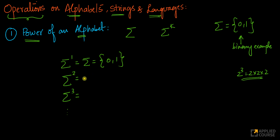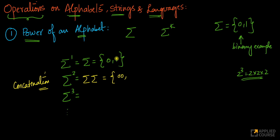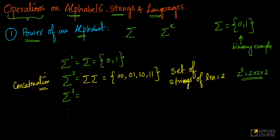Sigma square can be written as sigma concatenated with sigma. You can think of the power operator as concatenation. So sigma square, where sigma is {0, 1}, is formed by concatenating: 0 with 0, 0 with 1, 1 with 0, and 1 with 1. Sigma square is the set of strings of length 2 formed using the symbols in alphabet sigma.